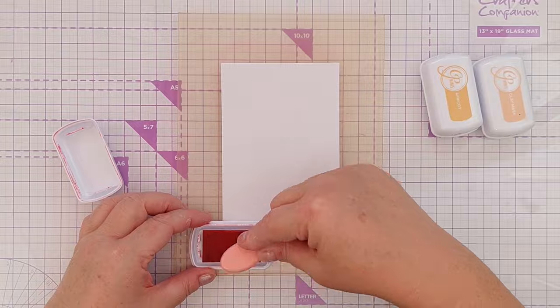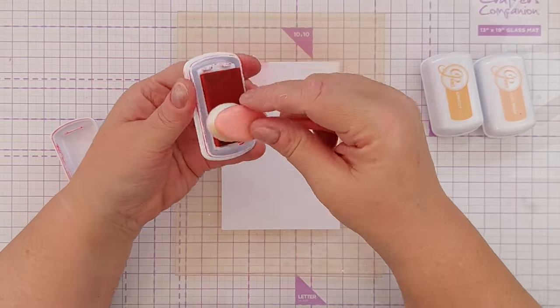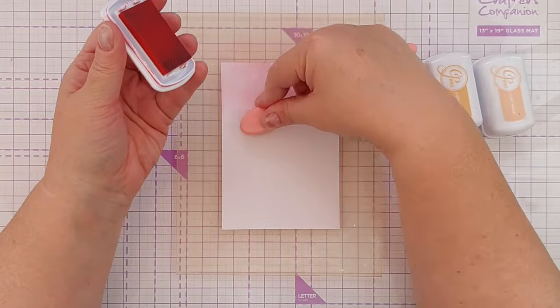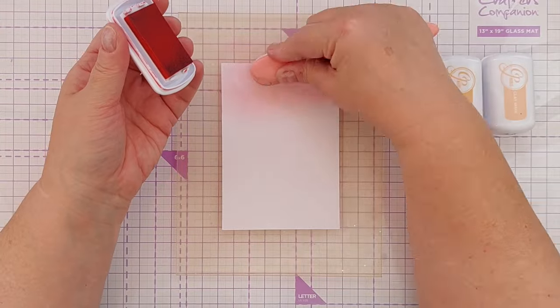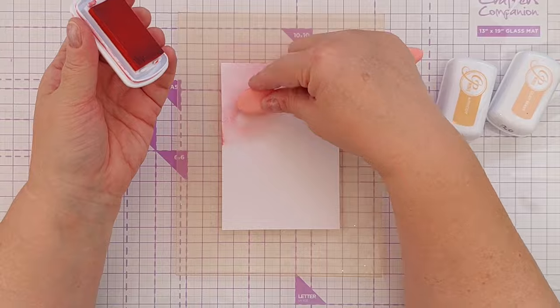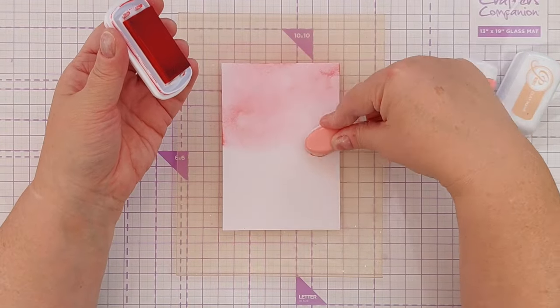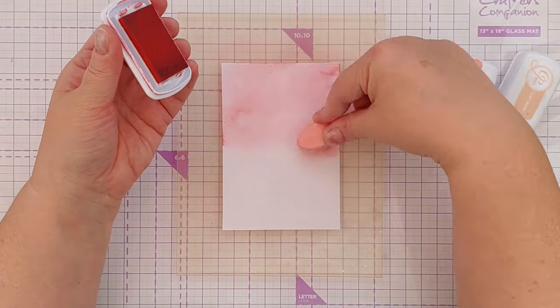To start with I have a piece of mixed media paper here and some Catherine Pooler inks. I'm using mixed media paper because the Catherine Pooler inks blend really well on it. I've got polished apricot and clay mask. I think these are all from the spa collection which are slightly more muted than the party collection colors.